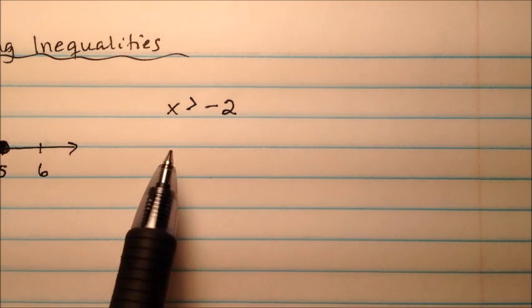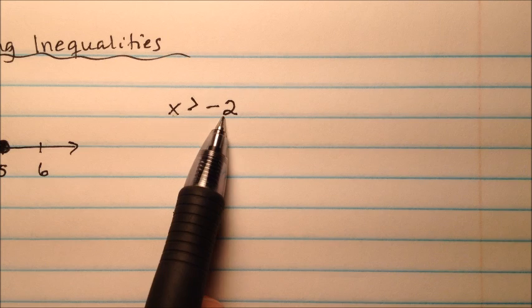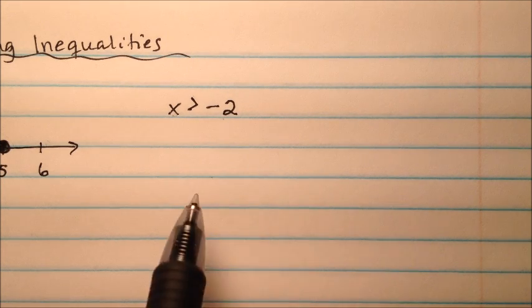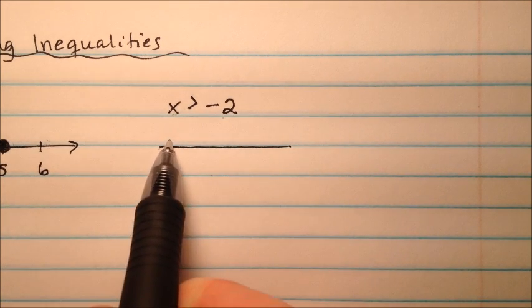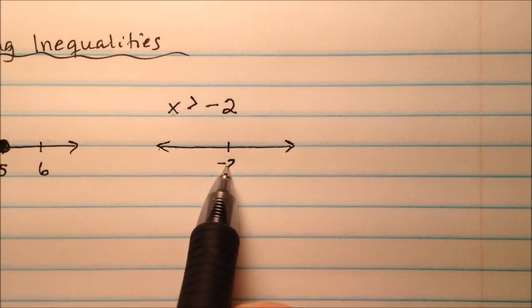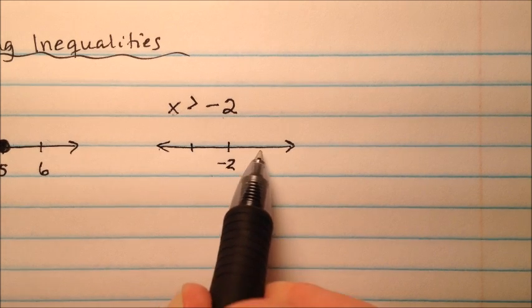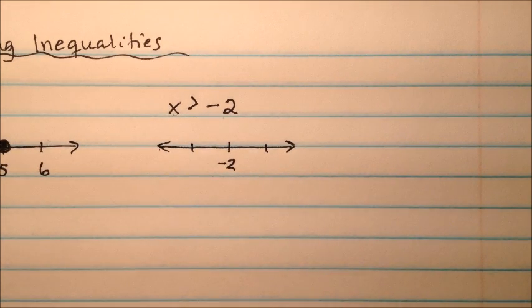So we slid the page over here. Now let's look at another example. x is greater than negative 2. So I know our number of interest is negative 2. So I'm going to go ahead and do a little handy-dandy number line. And put negative 2 in the middle because that's our number of interest. Now I'm going to fill in a couple of other values just so you get an idea of where we're talking about on the number line.